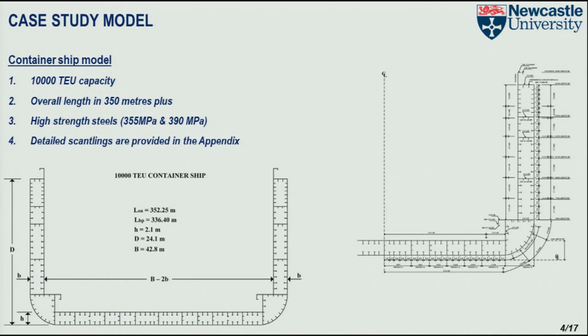This is our case study model — a container ship model. In the appendix of the paper, I provide a detailed cross-section scan and the scantlings of this cross-section. In case three, the damage zone is propagated from the lower deck of the side shell, also with a damage extent varying from 10% to 70%. In total, we have eight plus seven plus three damage scenarios that we will be analyzing.